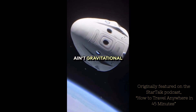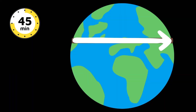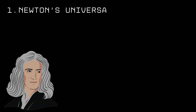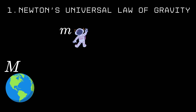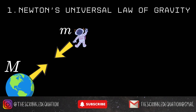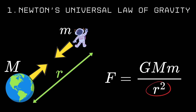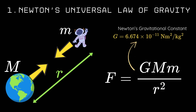That is amazing. To make sense of this whole magic tunnel through the Earth thing, we just need three key ingredients from physics. First up is the big one: Newton's universal law of gravity. It says that any two masses attract each other with a force that goes with the product of their masses and is inversely proportional to the square of the distance between them.